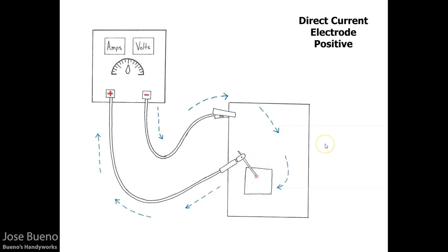This is what we call a closed circuit, where current can continuously flow from the power source through whichever cable is attached, into the workpiece through the welding arc, back into the opposite cable, and into the opposite terminal. An open circuit has a break which prevents the flow of current, like when you extinguish the welding arc or flip the off switch.